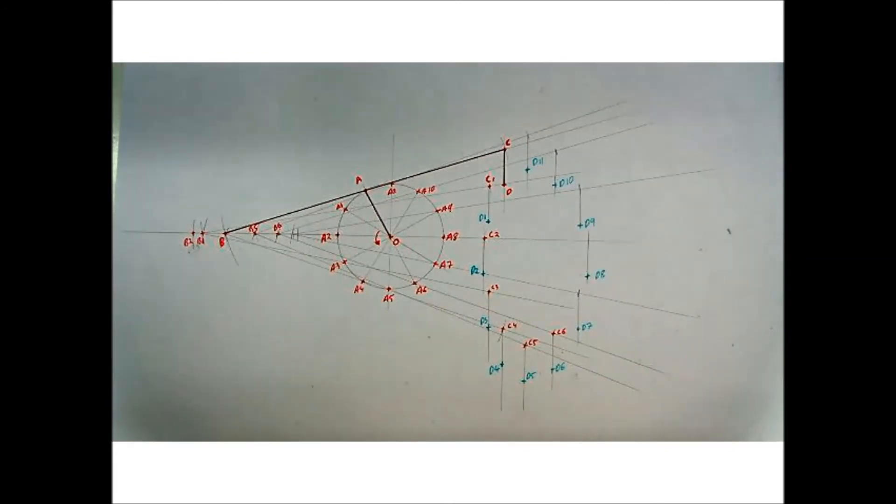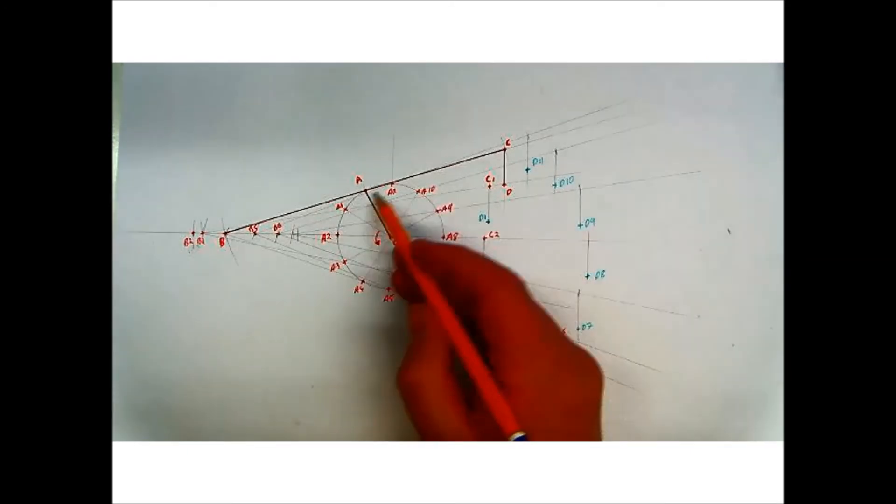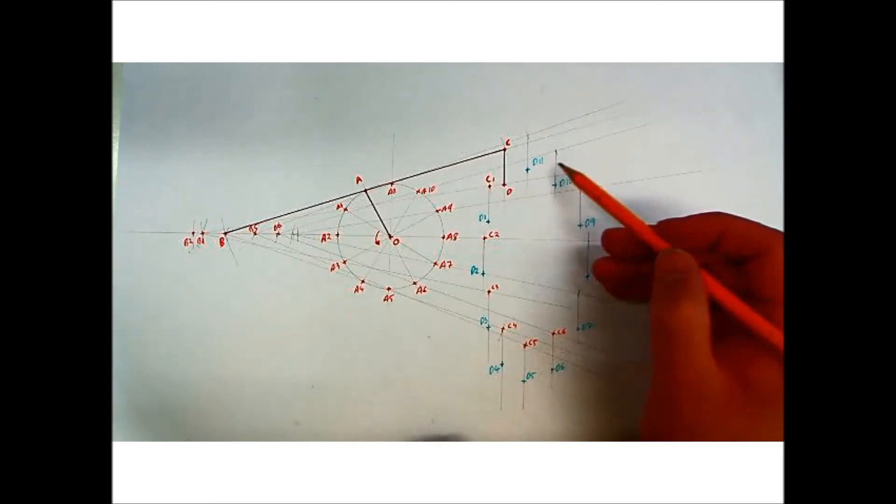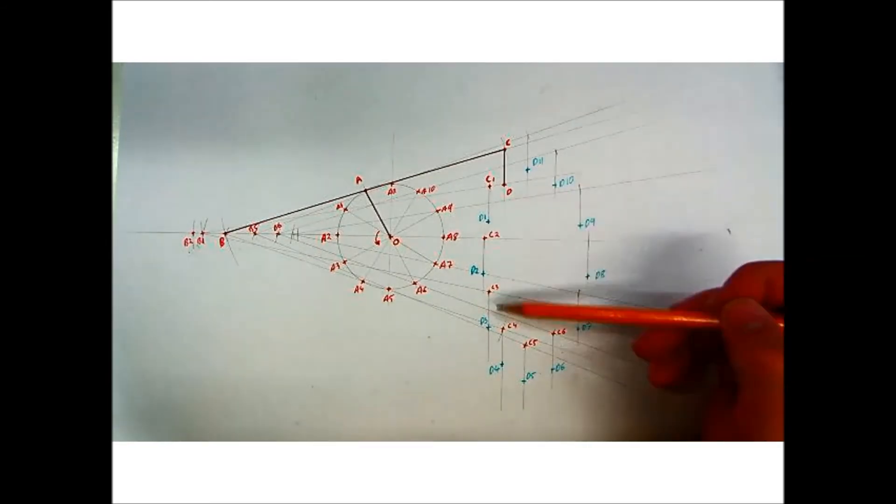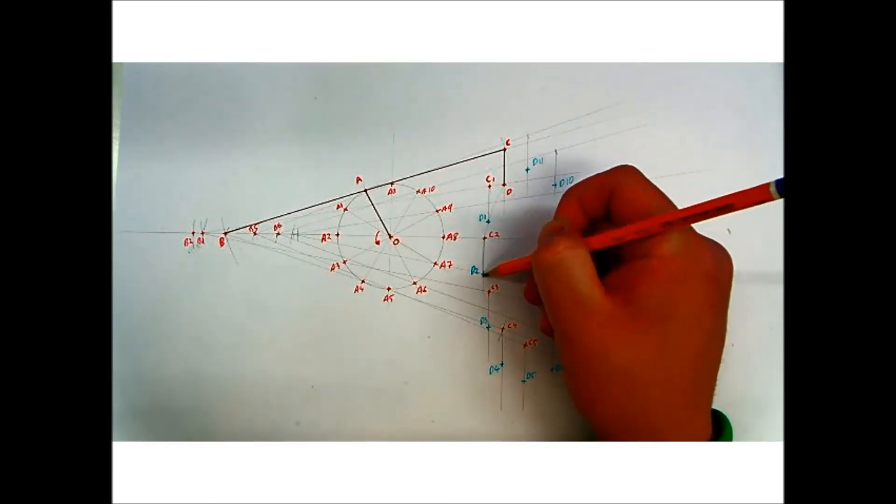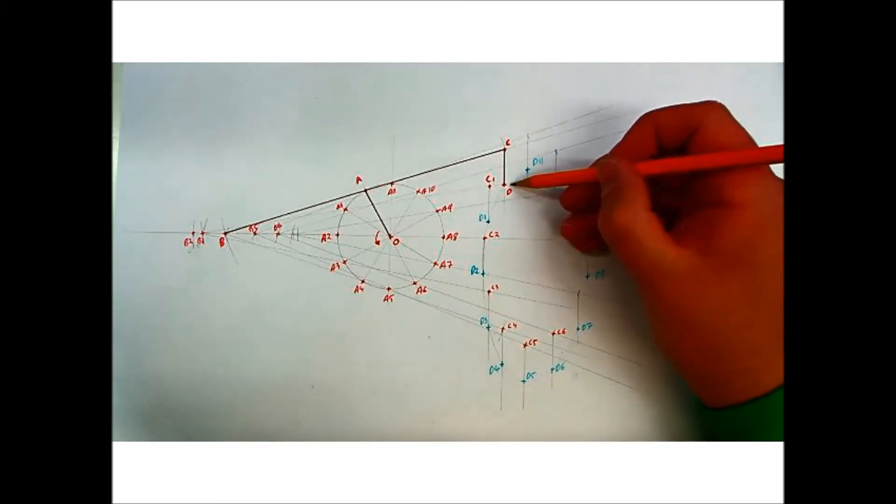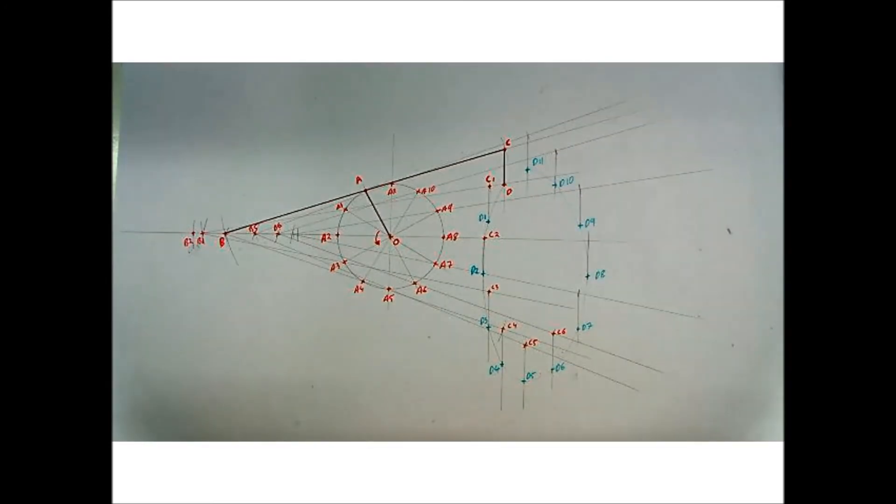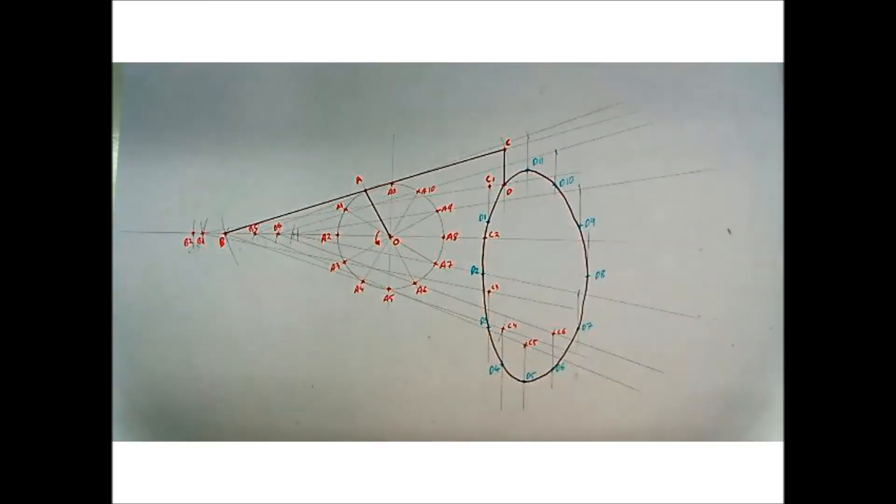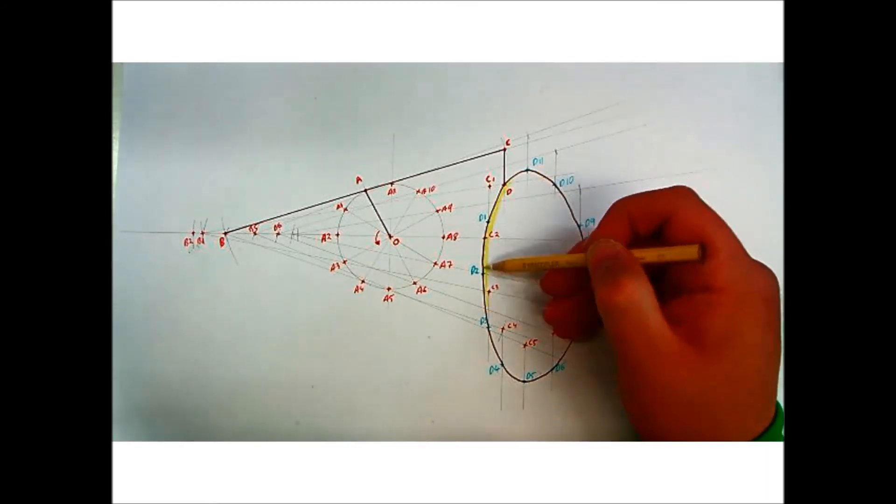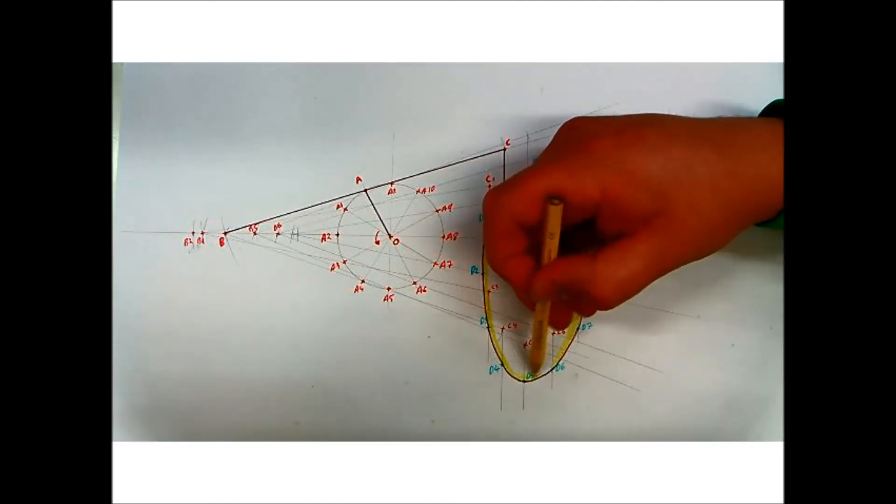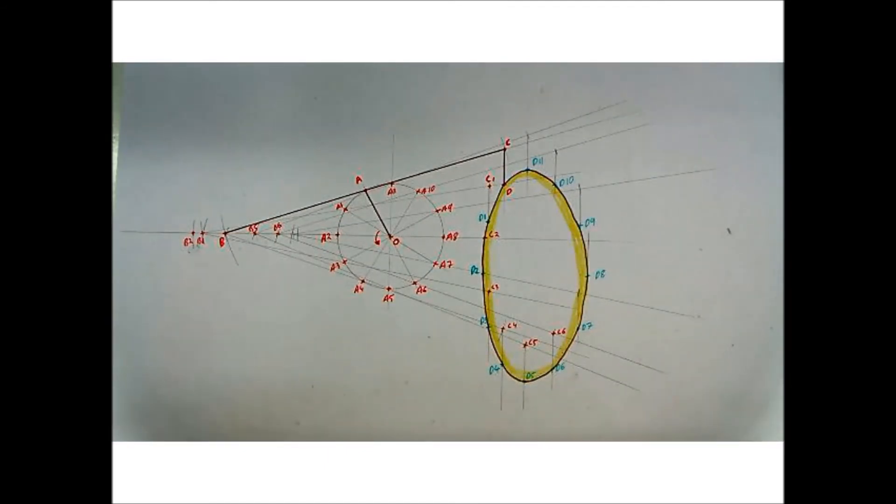So there are all your points for D. So D, traveling from A all the way back down to A again. So we have D, D1, D2 all the way back, D11 to D itself again. So once you've got all the points put in, join them in lightly freehand and then go over it again strong. And that's the locus of point D. So that is the locus of point D.